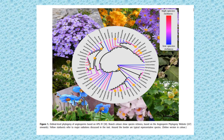This photograph shows the ordinal-level phylogeny of angiosperms based on the APG4 classification. Branch color shows species richness, ranging from red and pink for high richness to blue and purple for lower richness. Yellow starbursts refer to major radiations, and around the border are typical representative species. This diagram illustrates what is called the radiation of angiosperm evolution.